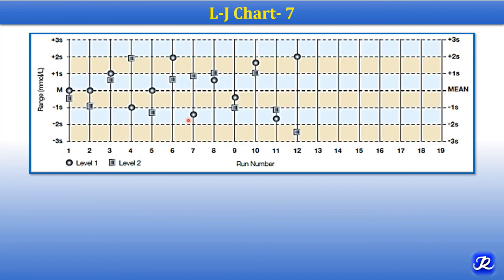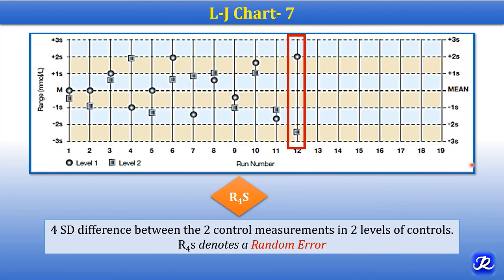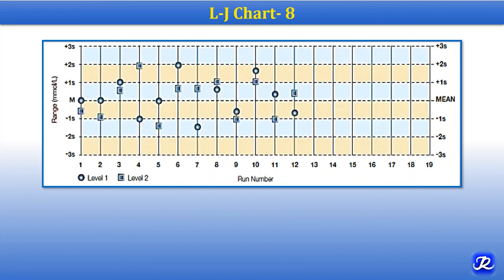This chart is also for two levels of control. Observe all the control values. At the 12th run, there is a four standard deviation difference — 1, 2, 3, 4 — four SD difference between the values of the two levels of control. Level 1 is here and level 2 is here. When there is a four standard deviation difference between control measurements of two levels, it is the R4S rule. There is a 4 SD difference between two control measurements in two levels of control, and it denotes random error.